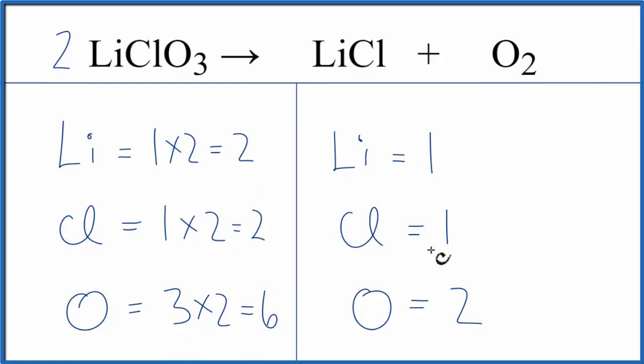So now everything's even on this side. We could just put a two in front of the LiCl. That would balance the lithium atoms. And then two applies to the whole thing. One times two. That would balance the chlorines, and we're left with the oxygens.